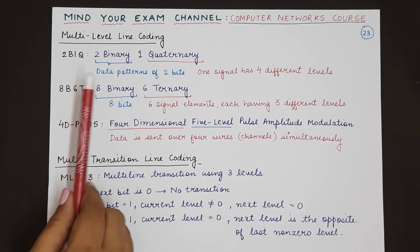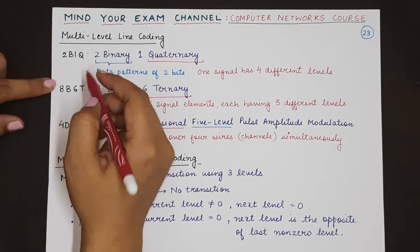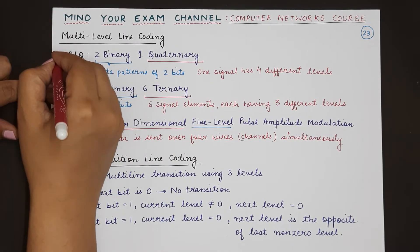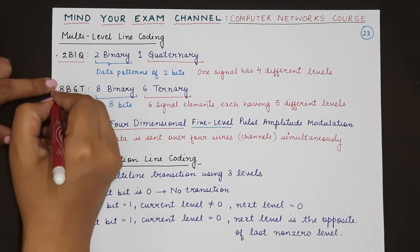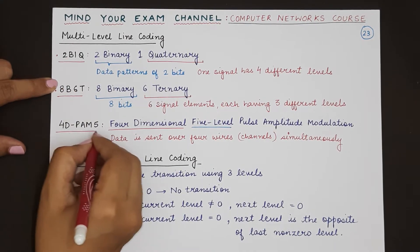Multi-level line coding has three main types: the 2B1Q, 8B6T, and 4D PAM5.